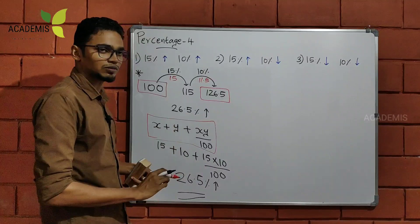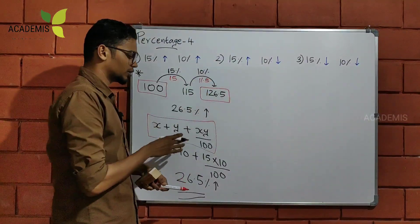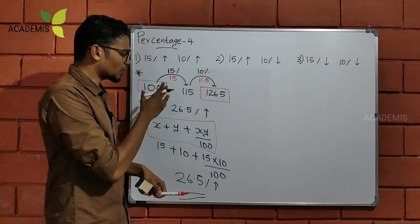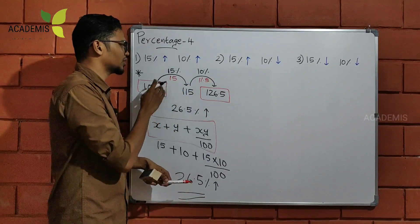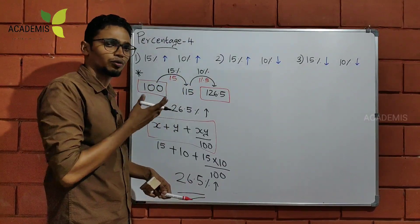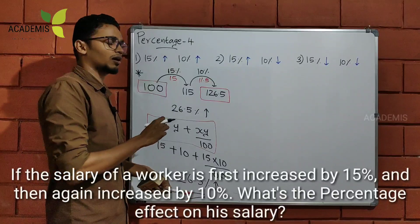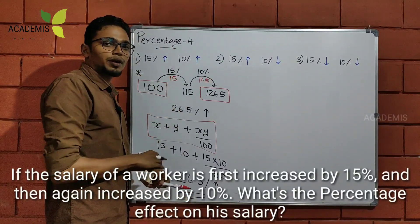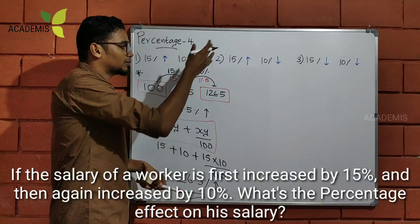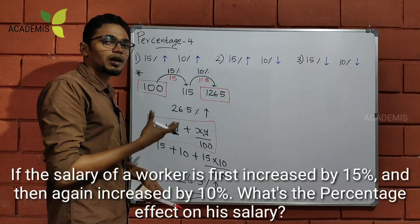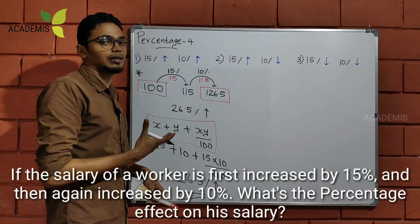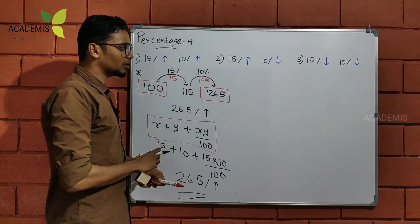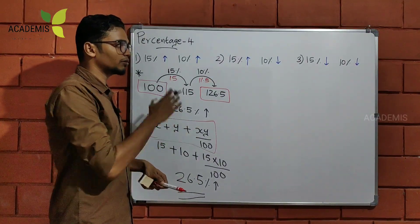The formula is: x plus y plus xy divided by 100. This is the answer formula. Application areas include population, salary.